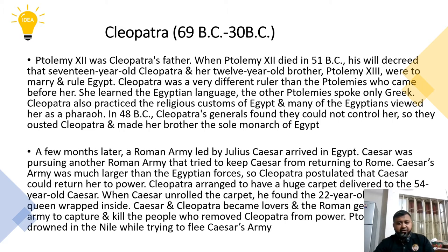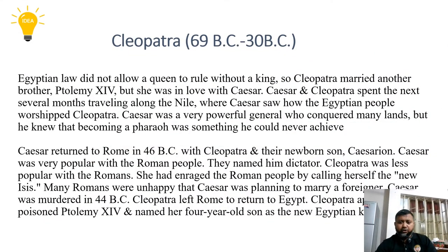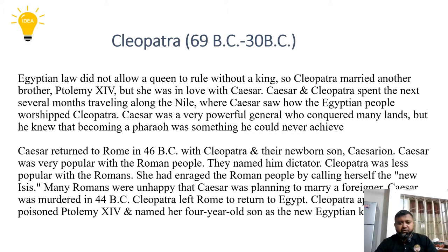Cleopatra's brother Ptolemy XIII was drowned in the Nile while he tried to flee Caesar's army. Egyptian law did not allow a queen to rule without a king, so Cleopatra had to marry her other brother, Ptolemy XIV — but she was in love with Caesar. Caesar and Cleopatra spent the next seven months traveling along the Nile, where Caesar saw how the Egyptian people worshipped Cleopatra. She was a very powerful ruler and she conquered many lands.